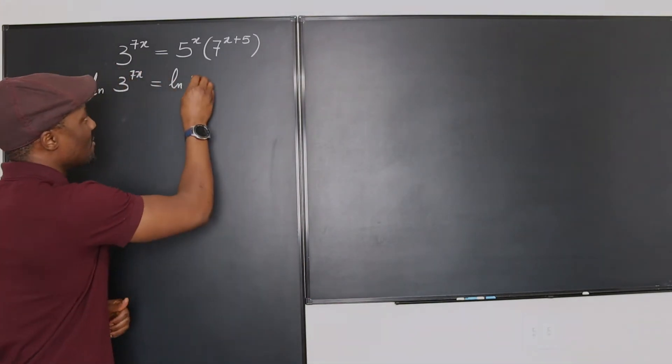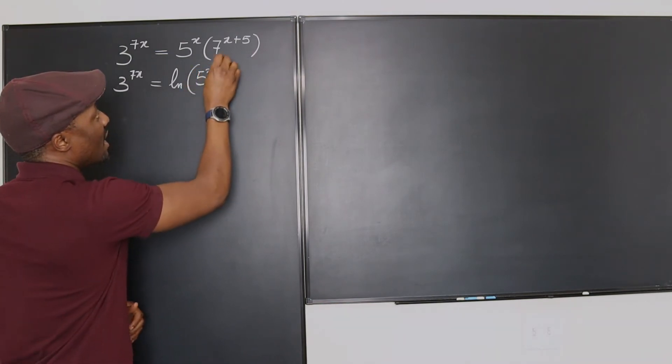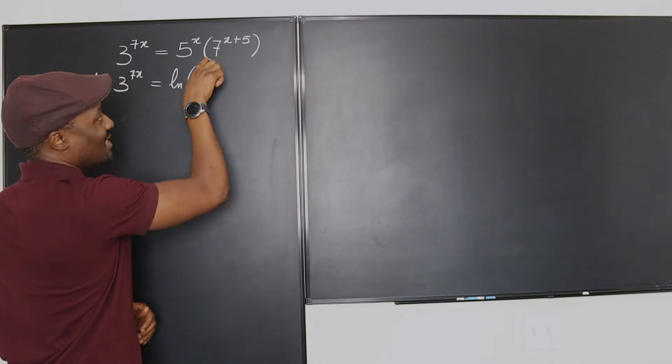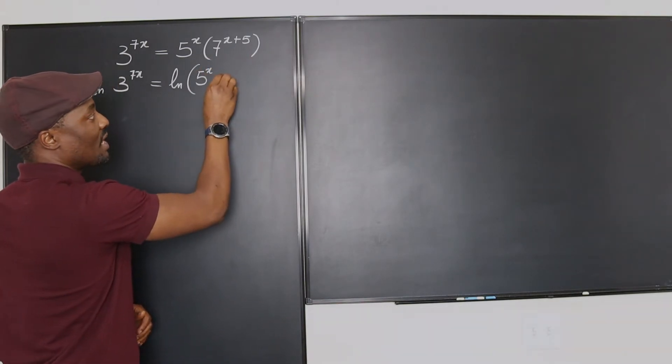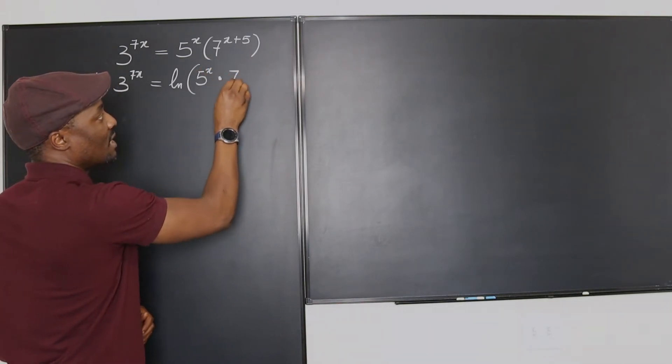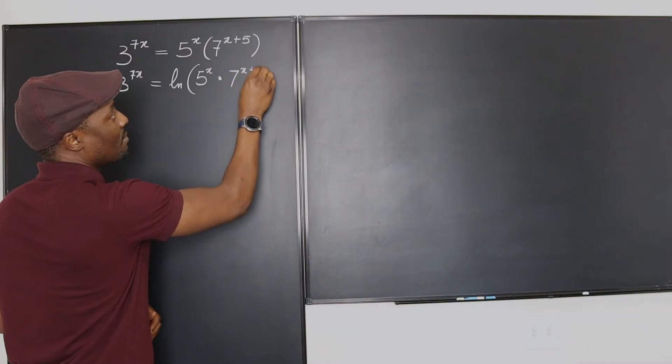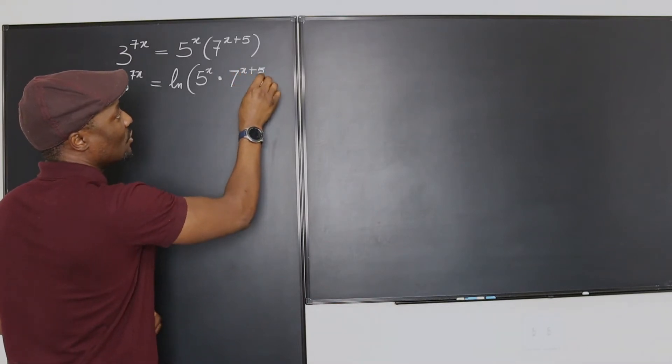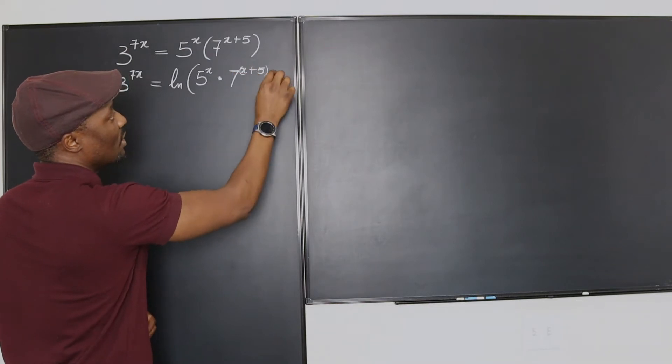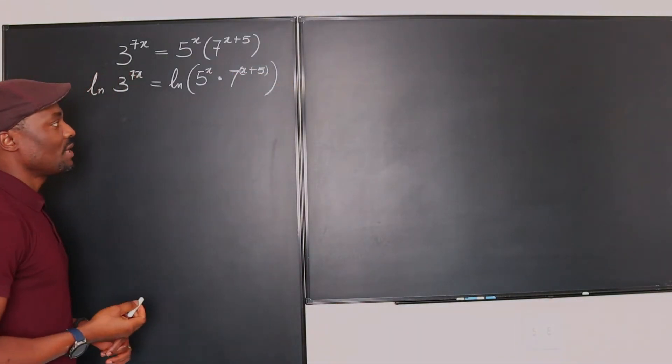So it's going to be the natural log of everything on this side, which is 5 to the x. And this is actually multiplication. So you can just use the multiplication sign, 7 to the x plus 5. Just to save us, I'm going to put this in parentheses so we know it belongs to that.